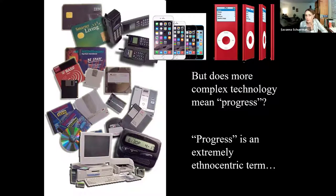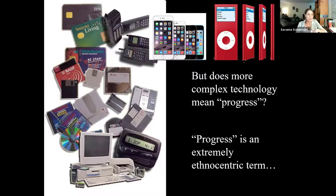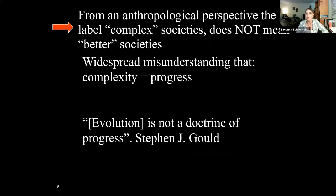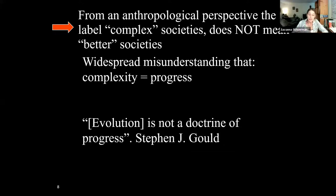It's a value-laden term and it's not really useful in talking about cultural variation or biological evolution. From an anthropological perspective, the label 'complex' doesn't mean better. This widespread misunderstanding — that complexity equals progress — indeed does not hold. This famous evolutionary biologist Stephen Jay Gould says evolution in general is not a doctrine of progress. That's not what it's about.